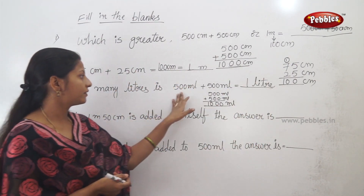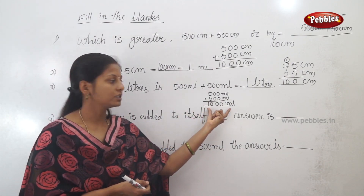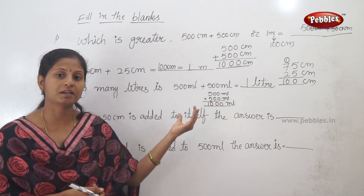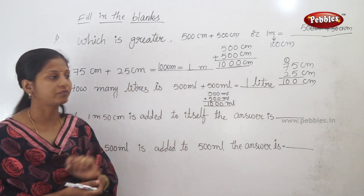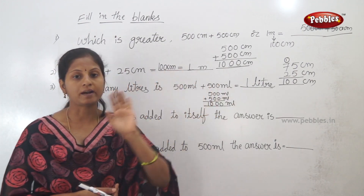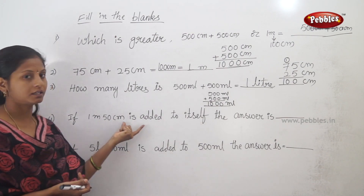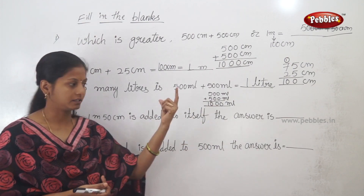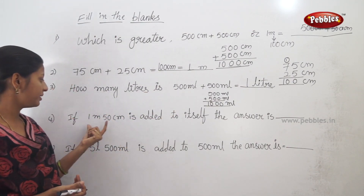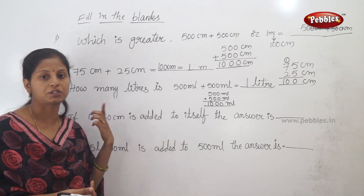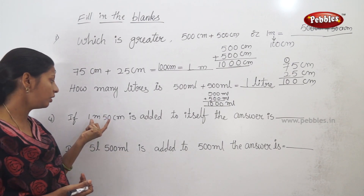So we have to add 1 liter. When we add 1 liter, we have 1000 ml. We have to convert the liters. 1000 ml is equal to 1 liter. So the answer is 1 liter.